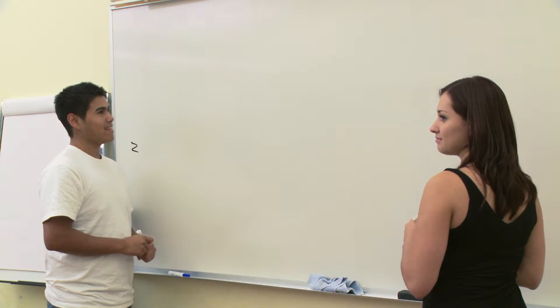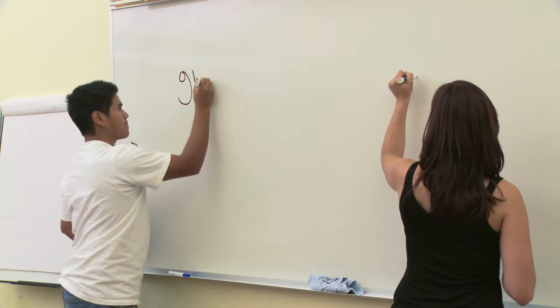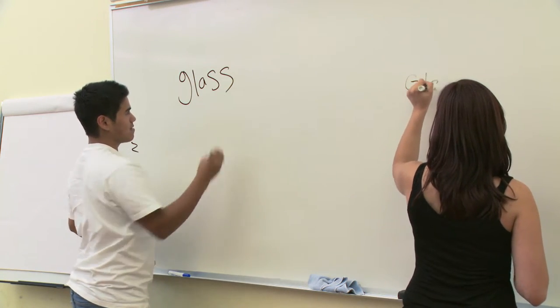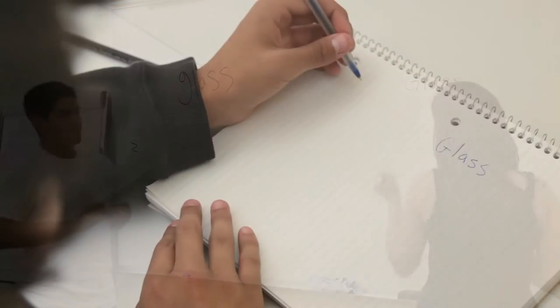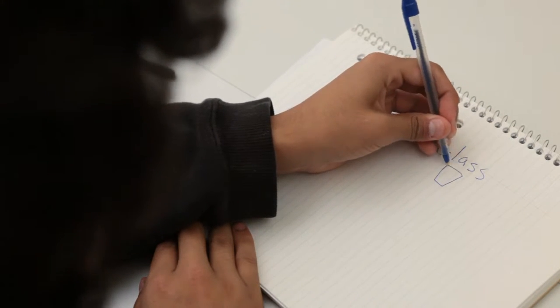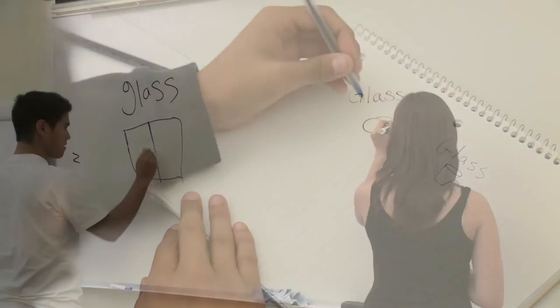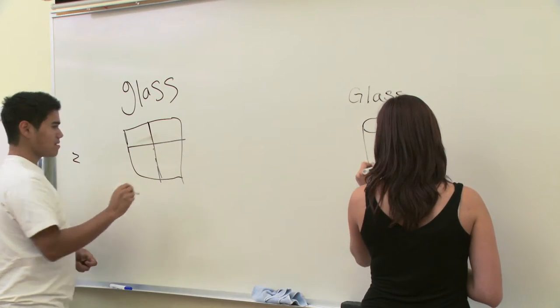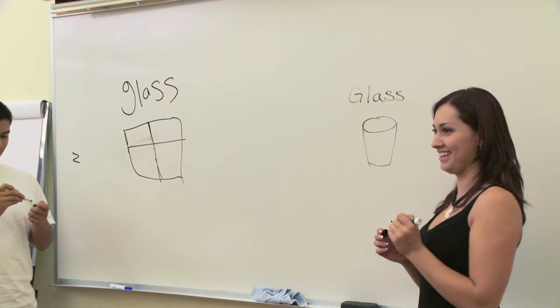Write glass. And for your information, that's with two S's. Very good. Now draw a glass. That's very good. We have two different images for glass. Great.